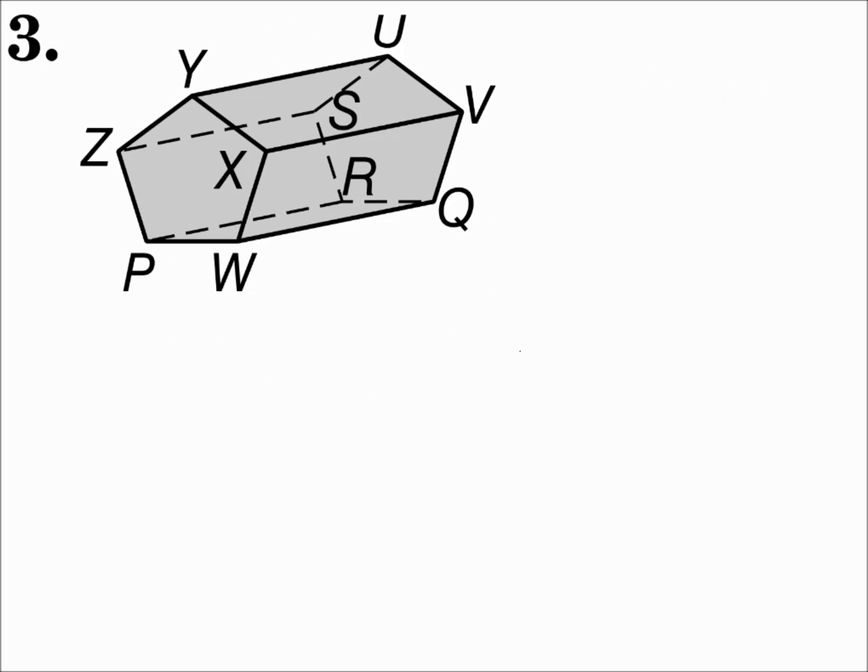Number three, this solid has two bases wrapped around with rectangles, so it's a prism. And those bases are pentagons, so it's a pentagonal prism.